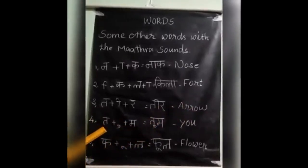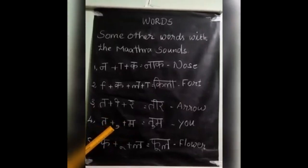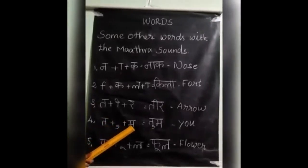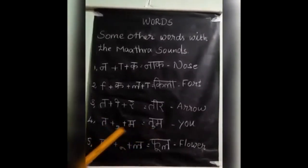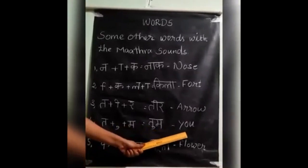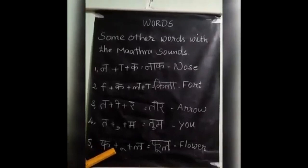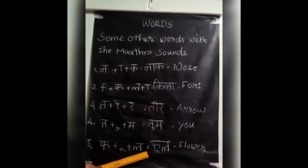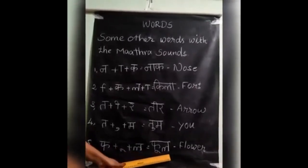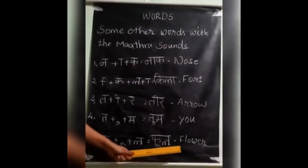The next one. Ta plus uki madra plus ma equal to tum. Tum means you. Next one — fa plus uki symbol plus la is equal to fool. How to pronounce this? Fool. Fool means flower.